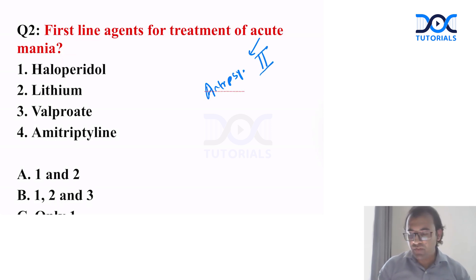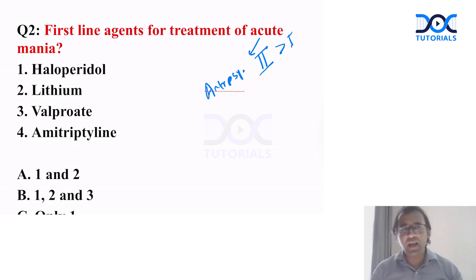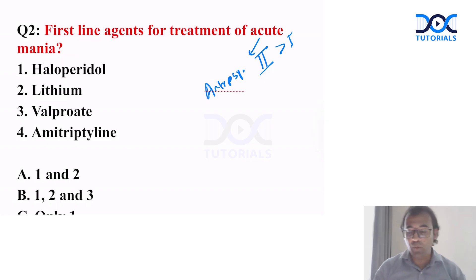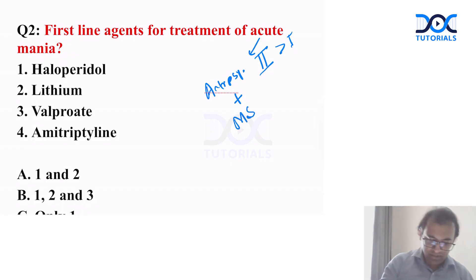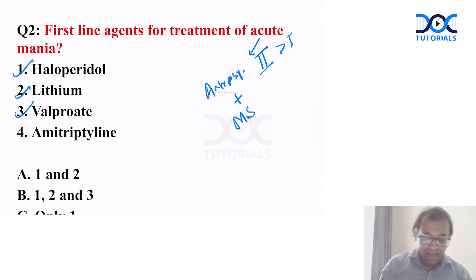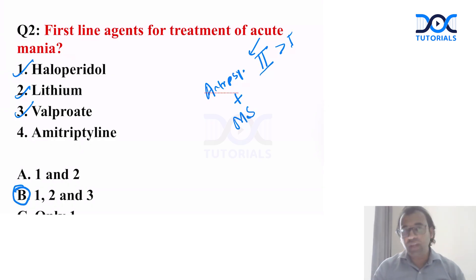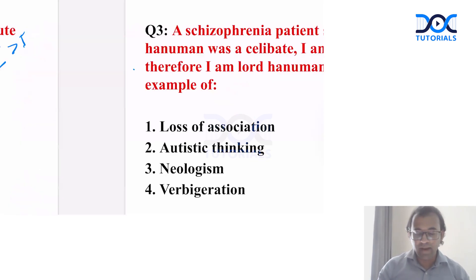Second-generation antipsychotics are more preferred than first generation. So antipsychotics like olanzapine, or even first generation like haloperidol, are used. First-line treatment also includes mood stabilizers. Out of the four options, the first, second, and third options can all be used as first-line drugs, so more than one answer was correct.